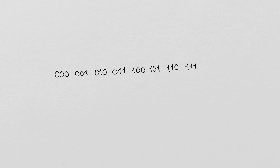Suppose we want to represent integers using 3 bits. We can interpret each bit string as a binary integer and represent any number from 0 to 7. However, with this scheme we aren't able to represent negative numbers, so let's use the second half of the slots to store the negative integers from minus 4 to minus 1.